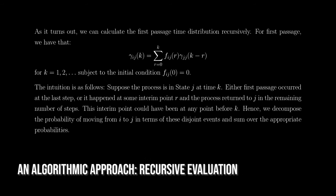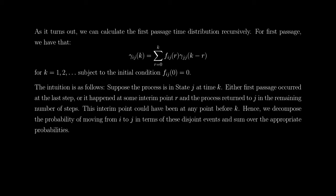We can calculate the first-passage time distribution recursively, provided we have access to the transition probabilities. We decompose the transition probabilities in terms of the first-passage time probabilities as follows: the probability of transitioning from state i to state j in k steps equals the sum over all r from 0 to k of the probability of first passage from i to j in r steps, multiplied by the probability of transitioning from state j back to j in k−r steps.